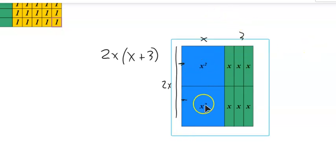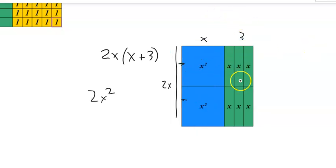And if I multiply that out, what do I get? I get two x squareds. One, two, three, and six x's. Two x times x is two x squared. Two x times three is six x.